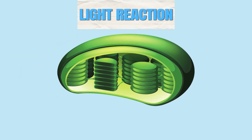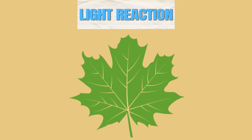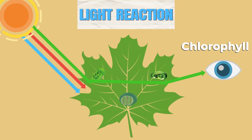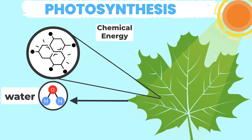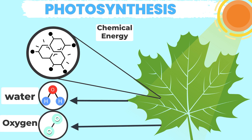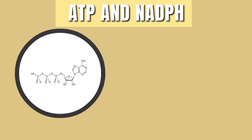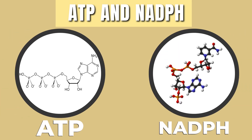Once a plant has these three, a light reaction starts in the thylakoid disc in the chloroplast. Chlorophyll along with several other pigments absorb different colors of light. They then pass light energy to the central chlorophyll molecule, where it is converted into chemical energy along with water into oxygen during photosynthesis. This chemical energy is stored as a compound called ATP and NADPH for later use.